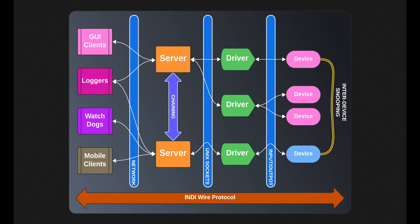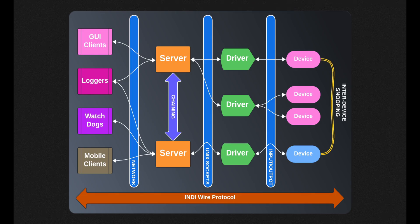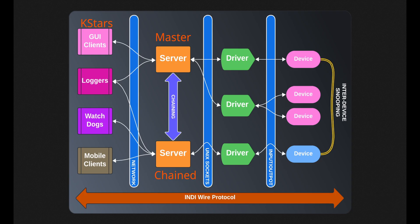Regarding remote drivers, we need to know whether you connect to a chained server or a non-chained server. INDI server chaining is where one server is started and communicates directly with another server. From the client's point of view — in this case, let's say KStars — when KStars connects to the server, if the first server is chained to the second server, then KStars should be able to see all the devices connected to both servers.